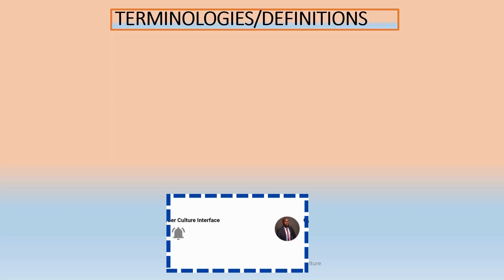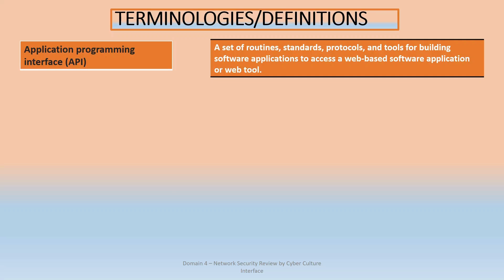Now we look at the terminologies. Some of the terminologies used in the video are explained here. The first one is Application Programming Interface (API). These terminologies are things you need to understand because while doing an exam, they can come up as a question. API is basically a set of routines, standards, or protocols and tools for building software applications to access web-based software or the web. API is like an interface for you to connect to applications running on the internet, made possible through protocols and standards.